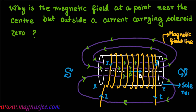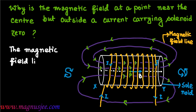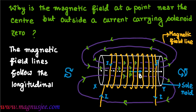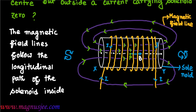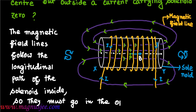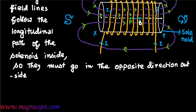X and Y are the two ends of the solenoid, and this cylindrical coil is known as a solenoid. The magnetic field lines follow the longitudinal path of the solenoid inside, so they must go in the opposite direction outside the solenoid. Each magnetic field line is a closed line with direction from south pole to north pole inside the solenoid.